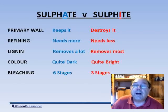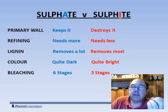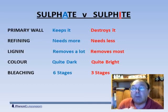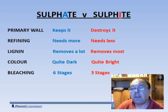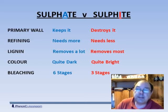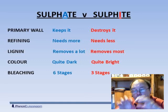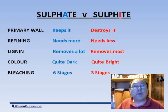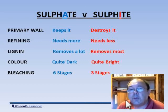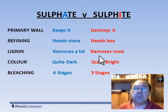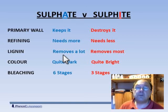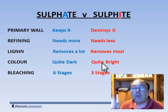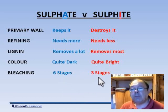Comparing sulfate pulp to sulfite pulp: sulfate pulp is less aggressively treated, while the sulfite process is very aggressive — it destroys the primary wall layer, whereas the sulfate process keeps it intact. As a consequence, sulfate pulp requires a lot more refining to break down that primary wall before we can start to wet out the fibre, while sulfite pulp's primary wall is gone so we can start wetting straight away. The sulfite process removes most of the lignin, so we need less bleaching — only three stages — whereas the sulfate process removes less lignin so we need more bleaching — six stages — and the pulp is a darker colour.